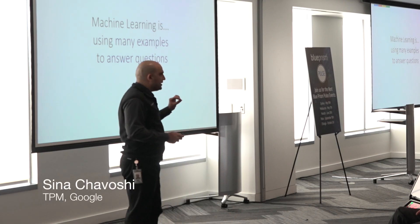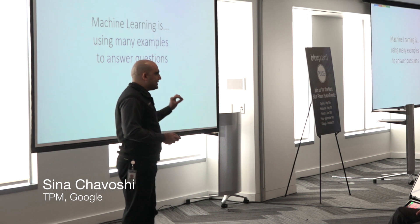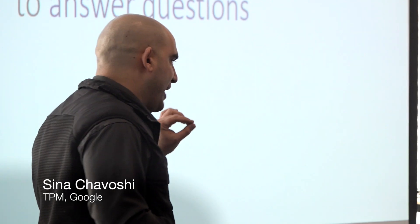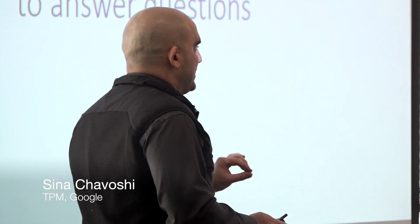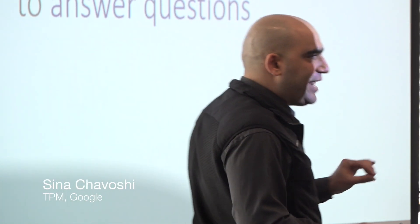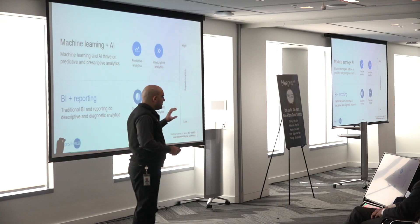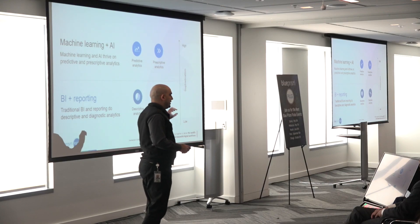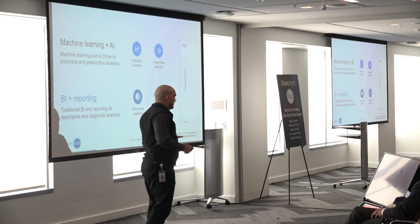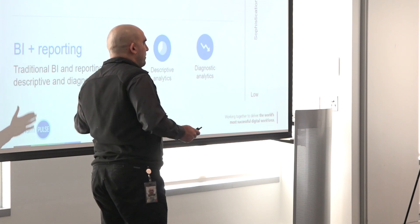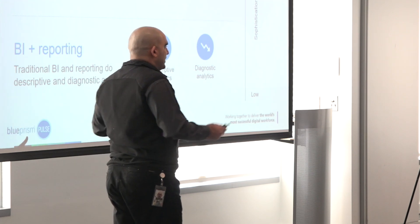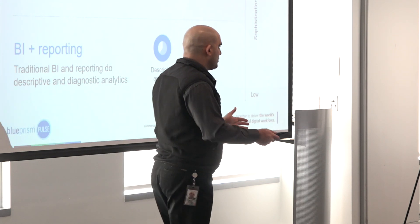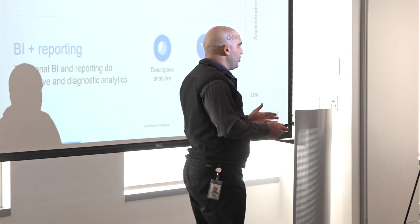Machine learning, in very simple terms, is looking at examples and learning from those examples — coming up with answers just based on looking at a whole bunch of examples. What is the difference between machine learning and business intelligence? Business intelligence looks at the past and looks at what happened up to this point, and it can do a very good job in reporting what happened.